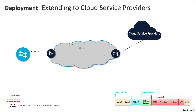Another use case becoming very popular is extending a secure channel from on-premises all the way to cloud providers. With rapid growth in cloud applications, there is a need to establish a secure encrypted channel from on-prem devices to cloud service providers. This design ensures sensitive data remains encrypted as it travels across colocation providers or WAN infrastructure, protecting it from potential security breaches during transmission to and from cloud environments.